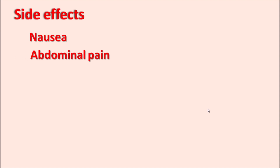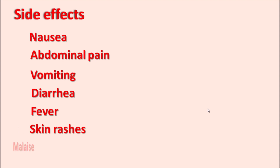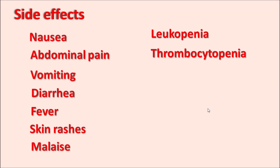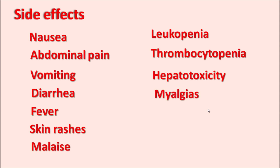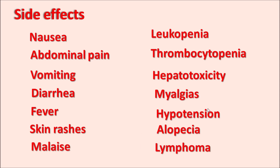The side effects of azathioprine include nausea, abdominal pain, vomiting, diarrhea, fever, skin rashes, and malaise. Hematological effects include leukopenia, thrombocytopenia, and anemia. Hepatotoxicity with elevated transaminase enzymes can also occur. Other side effects include myalgias, hypotension, and alopecia (hair loss). At high doses, azathioprine can produce lymphoma and leukemia.